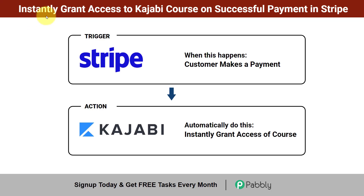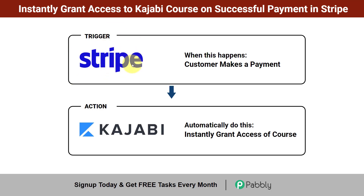In this video we will learn how to instantly grant access to a Kajabi course on successful payment in Stripe. Assume that you have created a course in Kajabi and you are selling the same course via Stripe payment gateway. Whenever a customer makes a payment via Stripe, you want to instantly and automatically grant access of that course to the customer who has just made the payment.